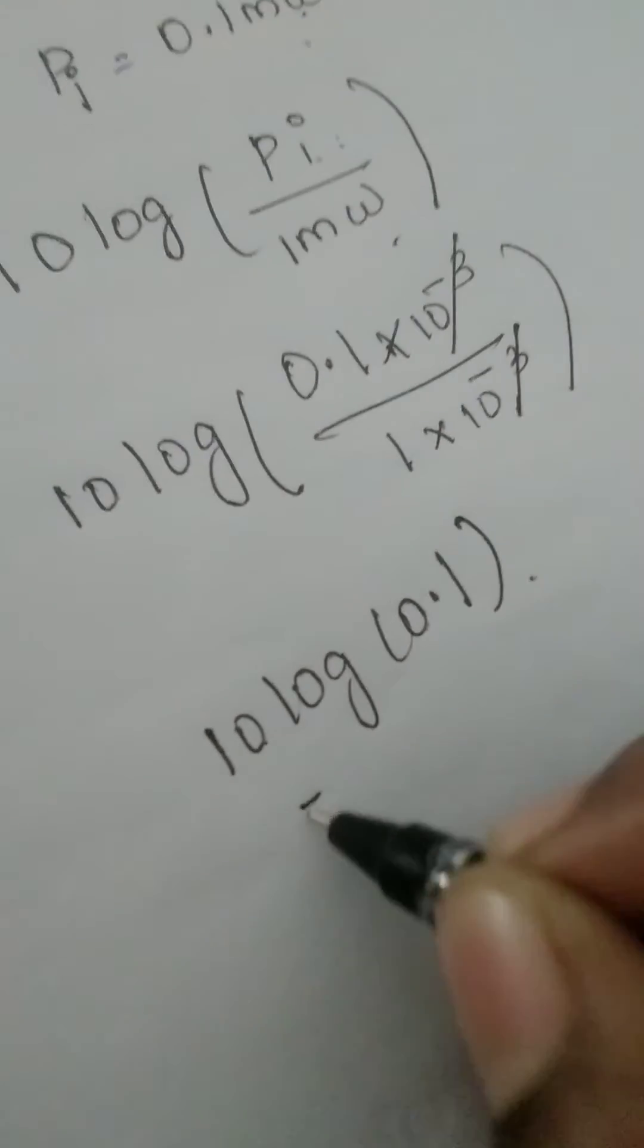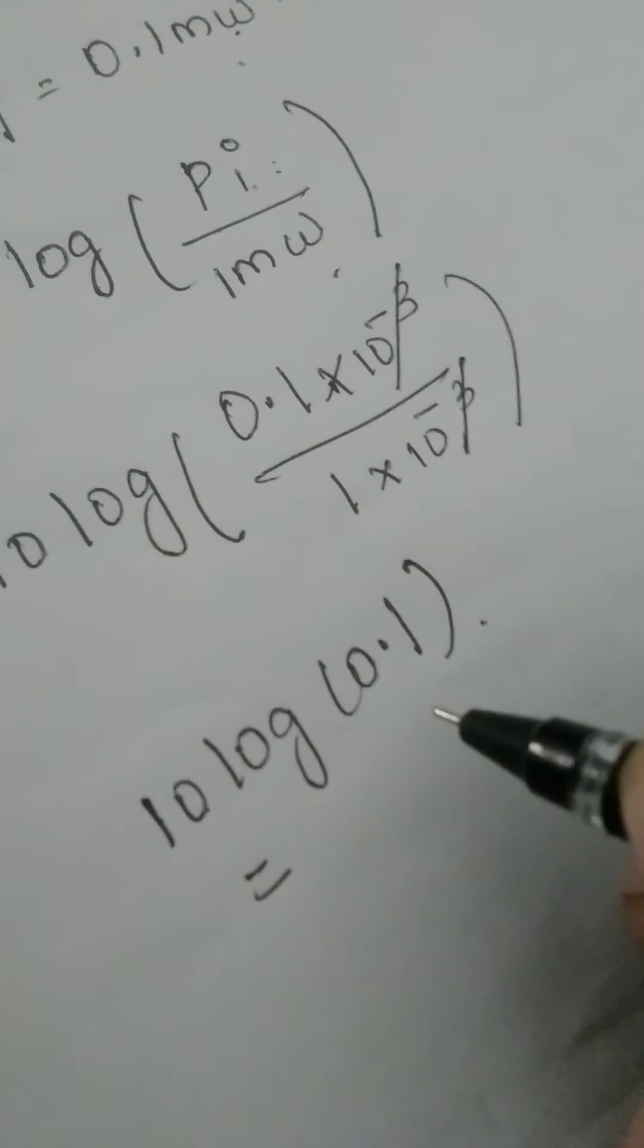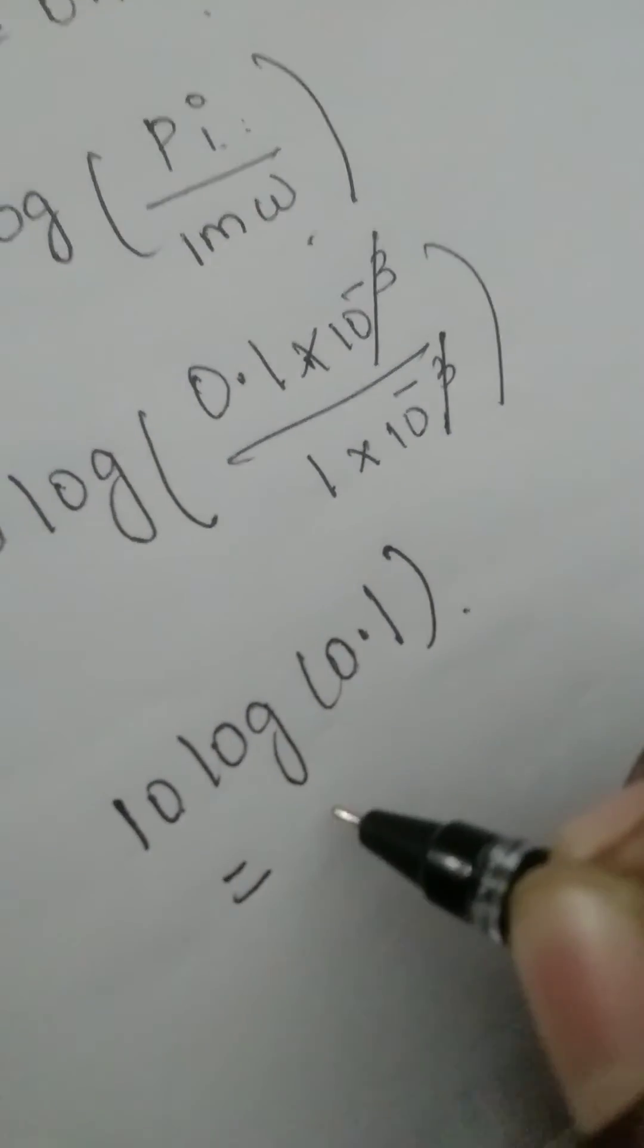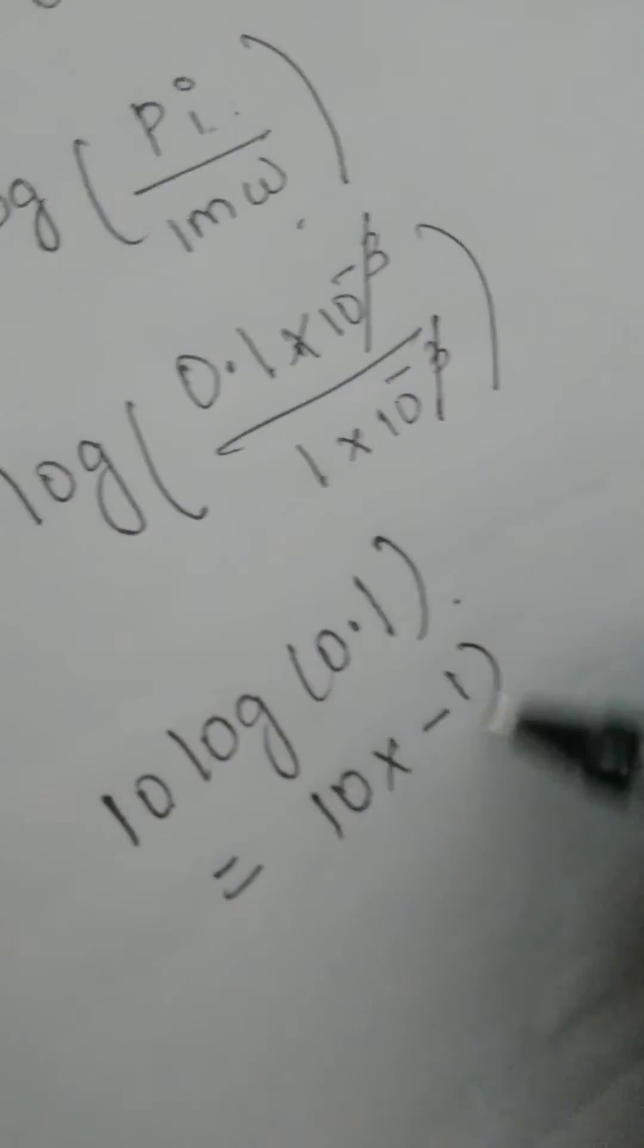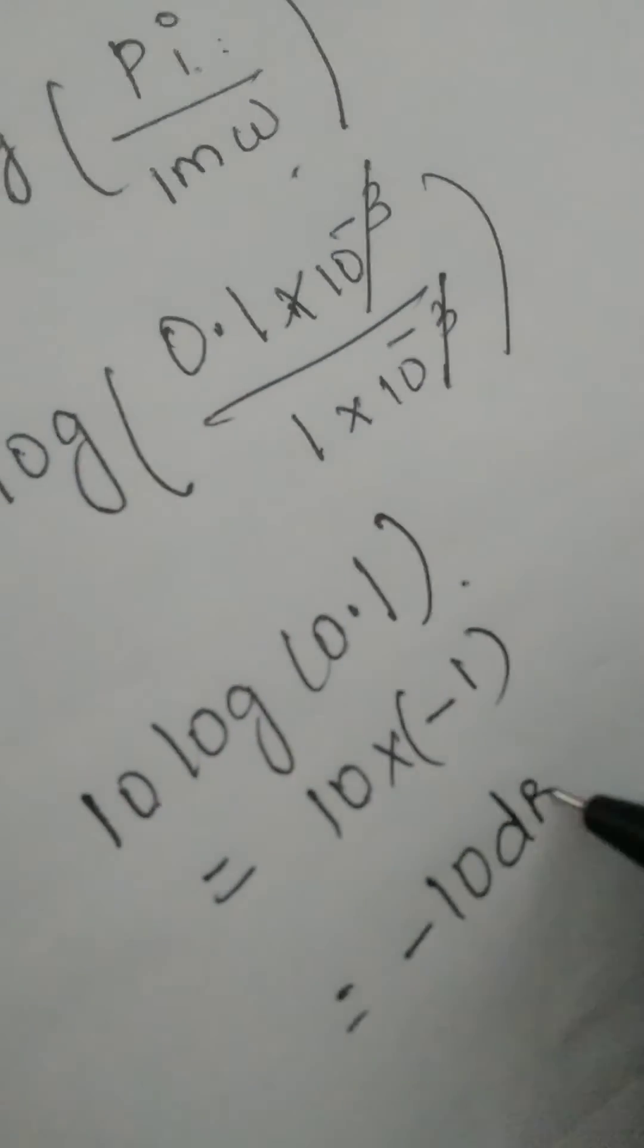So your answer is log 0.1 is nothing but minus 1. So 10 into minus 1. Your answer is minus 10 dBm.